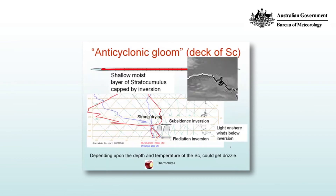Very often you get what's known as anti-cyclonic gloom, and that is a shallow moist layer of stratocumulus capped by an inversion. Here's the same trace we saw earlier and on the inset there's a satellite image — you can see a large sheet of stratocumulus cloud. So between the subsidence inversion and the beginning of the saturated and near-saturated layer you have the formation of stratocumulus cloud. There's also a radiation inversion near the surface, and light onshore winds below the inversion advecting the stratocumulus onto the coast. Depending upon the depth and temperature of the stratocumulus we could also get drizzle, but in this case it doesn't look particularly likely.